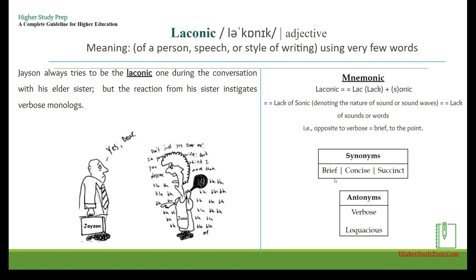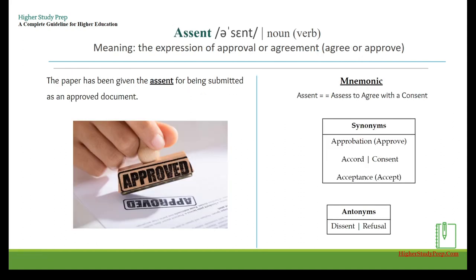Synonyms of laconic: brief, concise, succinct. Antonyms: verbose, loquacious. Assent — this word can be a noun or a verb. As a noun it means the expression of approval or agreement; as a verb it means to agree or approve.